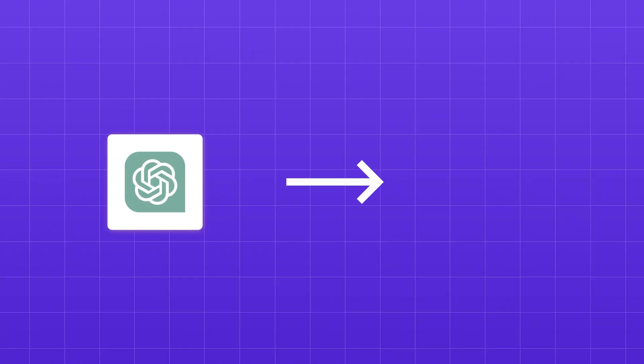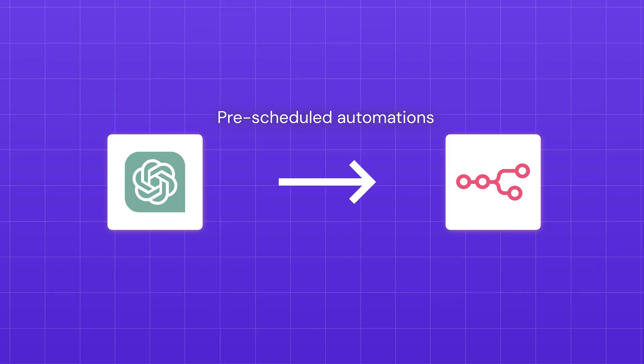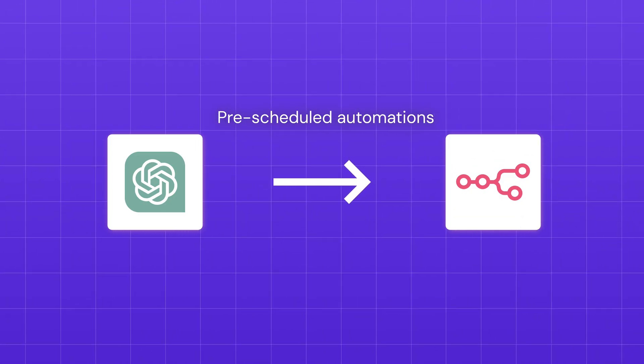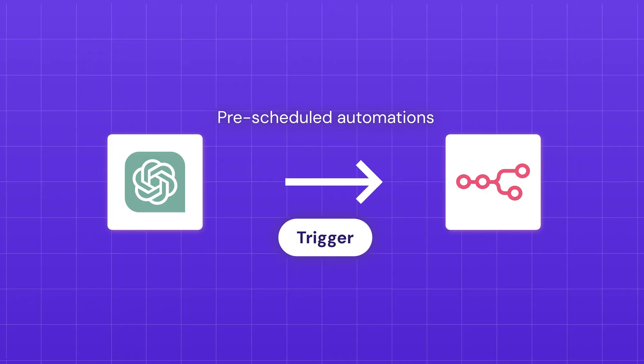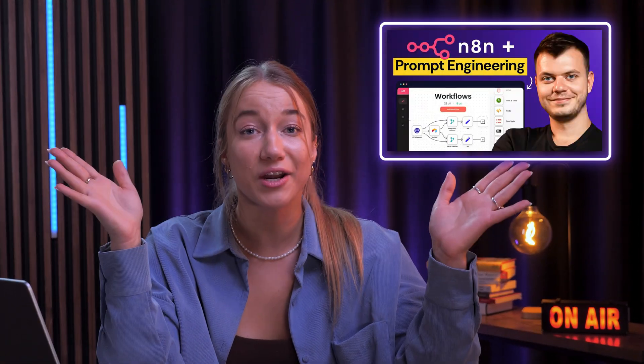To take this automation one step further, you can connect ChatGPT to an automation client like N8N. Once you do that, you can start running pre-scheduled automations, which can really save you a lot of time. Once you set up a trigger, you've basically got a personal assistant right at your fingertips, which is really cool. If you need any N8N ideas, we have a previous video all about N8N - make sure to check it out.